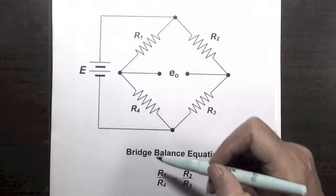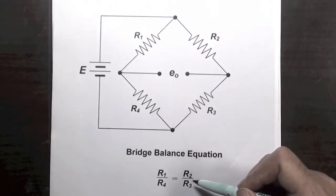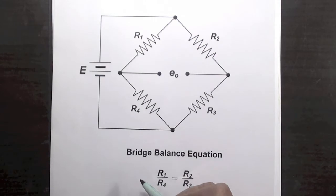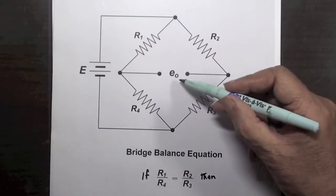The fundamental property of the bridge is that if the ratio of resistances in one pair of adjacent arms is equal to the ratio of resistances in the other pair, then the output from the bridge is zero and we say that the bridge is balanced.